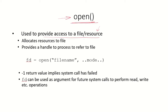When the OS receives this request it will allocate resources to the file and it will provide a handle to the process. Using that handle the process can now refer to the file. Suppose the process wants to open a particular file, and the mode of opening the file can also be specified, whether it is to be opened in read mode, write mode, or any other.